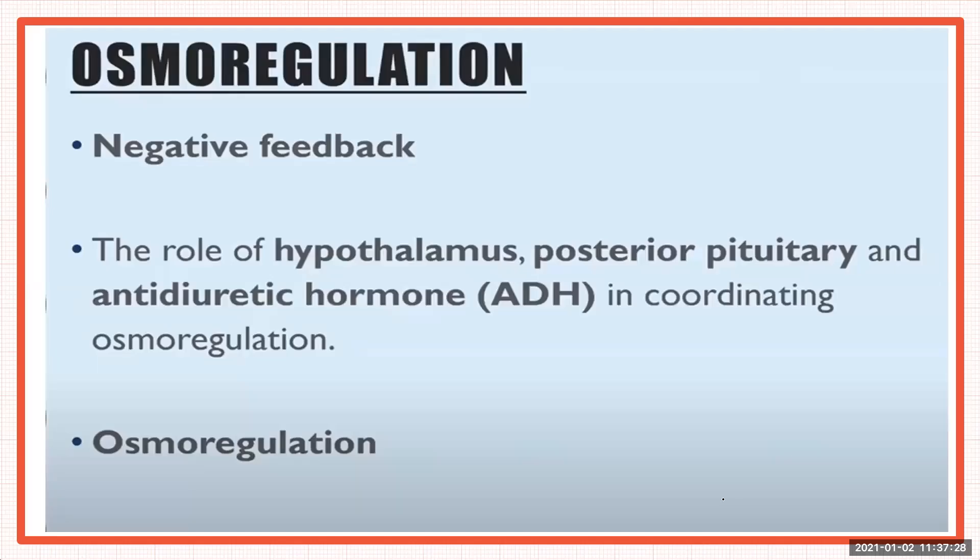This is the third part of lesson three. We will talk about osmoregulation. We have already talked about the structure and function of the kidney and the function of the nephron. Now we are talking about osmoregulation — we will cover negative feedback, the role of the hypothalamus, posterior pituitary gland, and antidiuretic hormone in coordinating osmoregulation, along with the basic definition of osmoregulation.